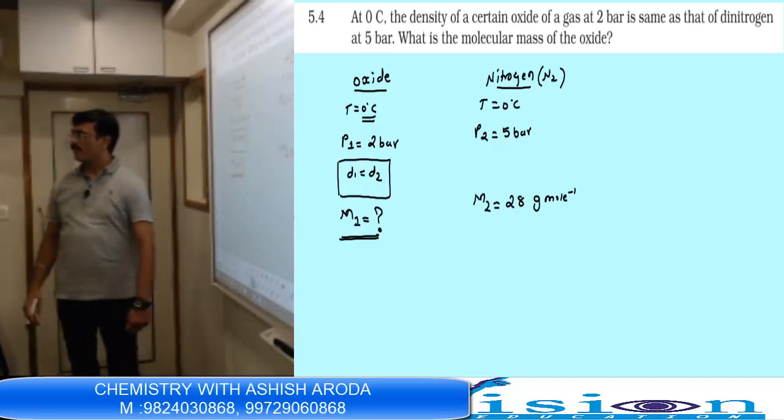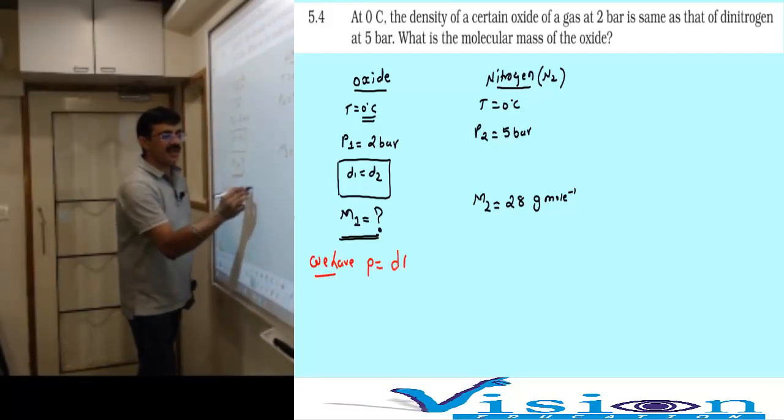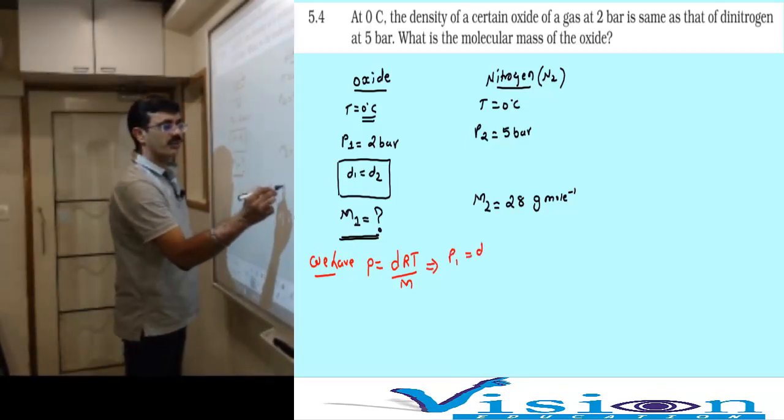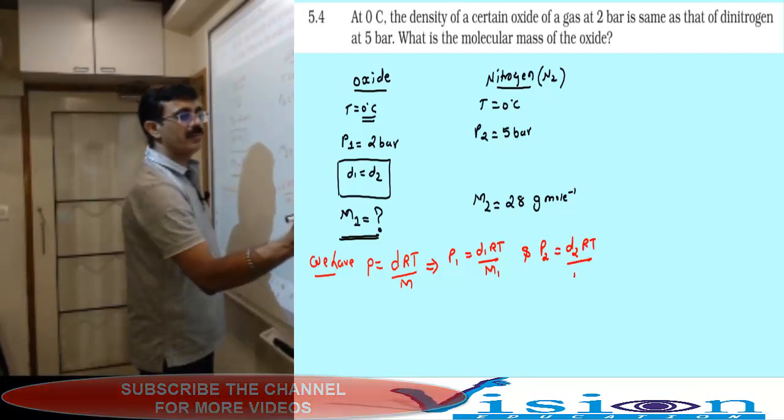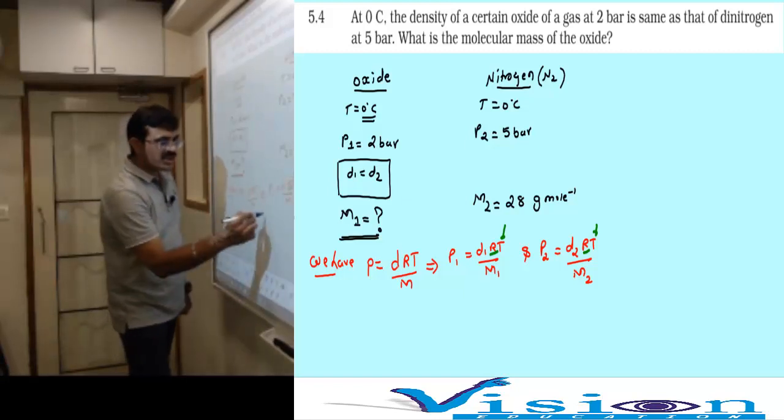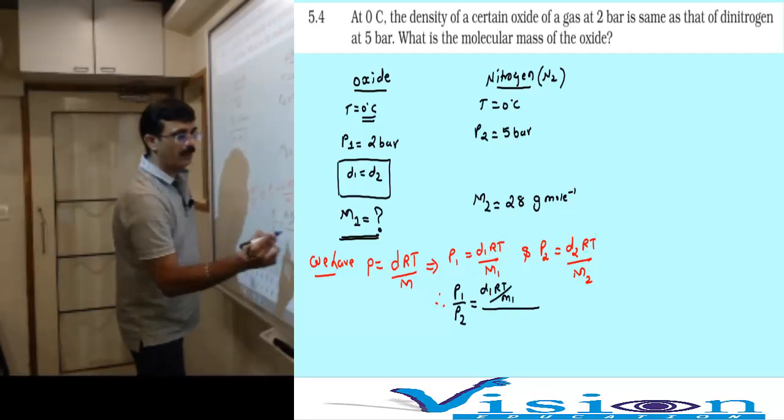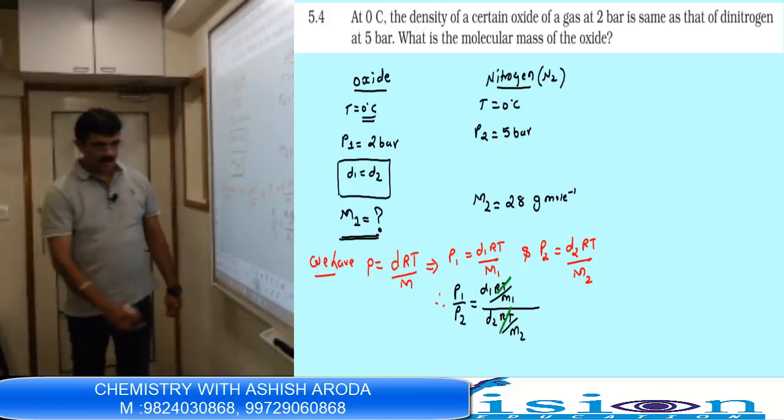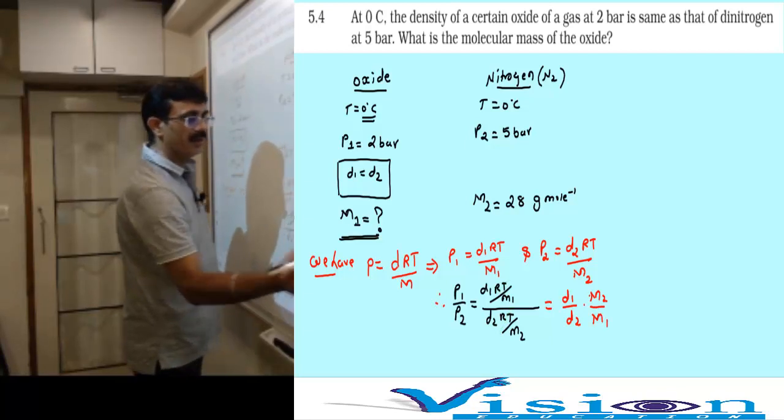We have oxide and nitrogen N2. Temperature is 0 degree Celsius for both. Pressure of oxide is 2 bar, pressure of dinitrogen is 5 bar. At that time density is same, d1 equals d2. We need to find molecular mass m1. m2 is known because dinitrogen N2 has molecular mass 28 gram per mole.